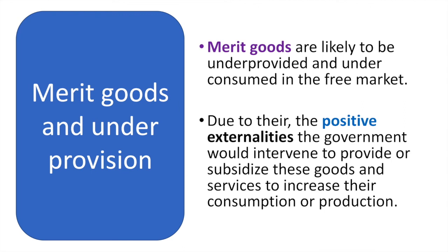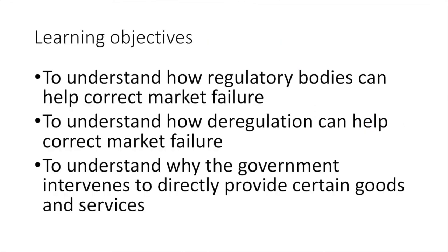Offering government funded schools at no direct cost to the consumer will increase the number of students attending school. In many countries, it is also legally required that children of a certain age attend school. By now you should have a clear idea of how these three factors — regulatory bodies, deregulation and direct provision — can impact the allocation of resources. Leave a comment or question below if you need any help, and I'll do my best to answer.